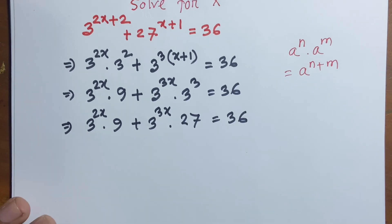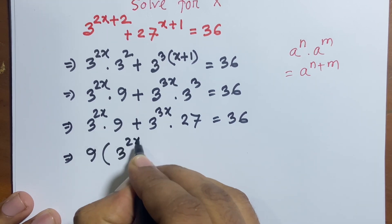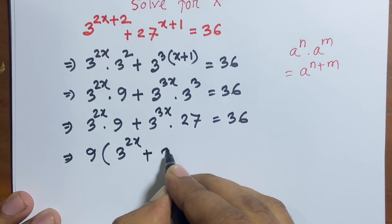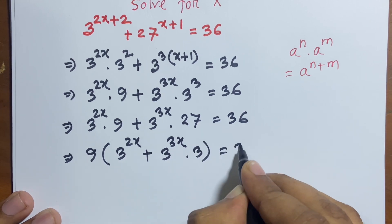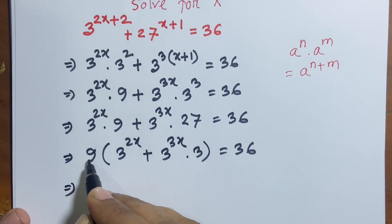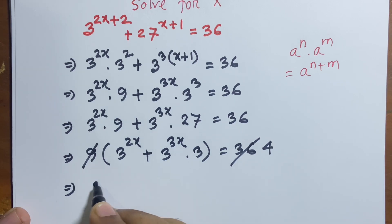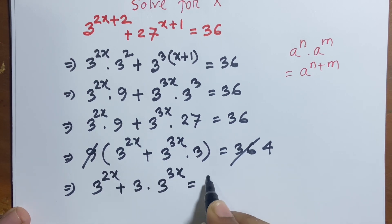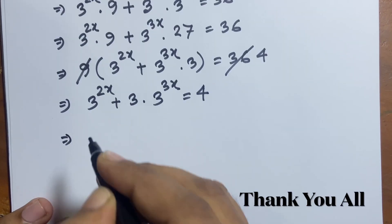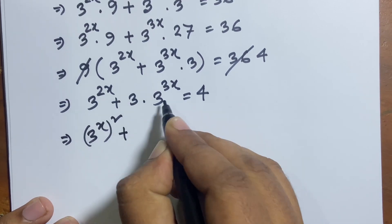Now I can see easily that 9 is common. Factoring out, we get 9 times 3 power 2x plus 3 power 3x. Then 27 divided by 9 equals 3. So dividing both sides, 36 divided by 9 equals 4. Now I can write: 3 power 2x plus 3 times 3 power 3x equals 4.